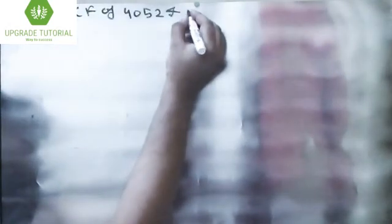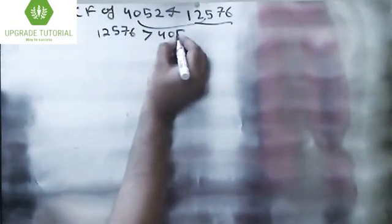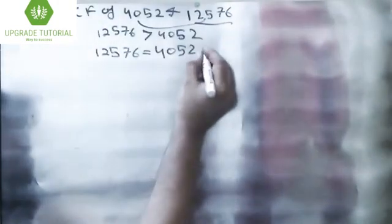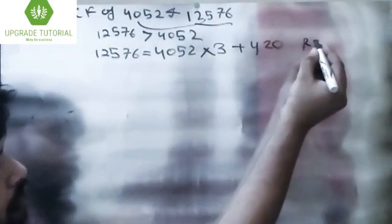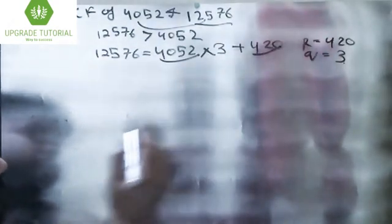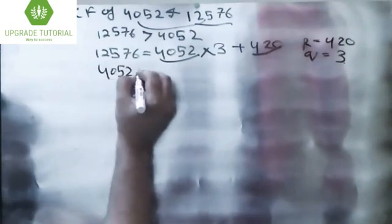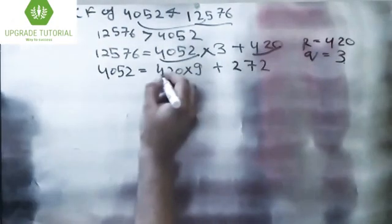Now let's take another example. Suppose we have to find the HCF of 4052 and 12576. Among these, which is largest? 12576 is greater than 4052, so 12576 = 4052 × 3 + 420. Now r = 420 and q = 3. This becomes a and 420 becomes b.